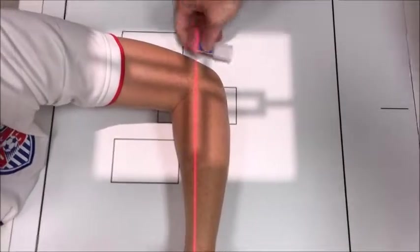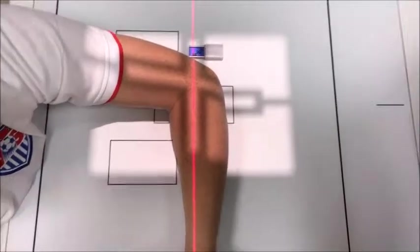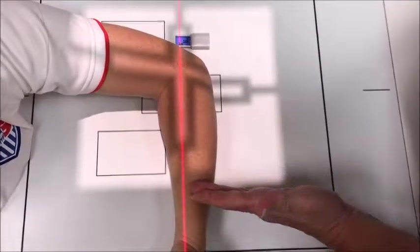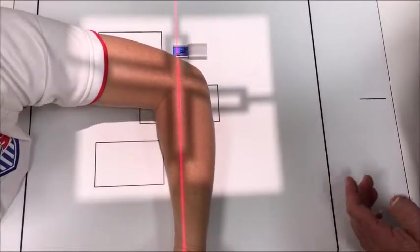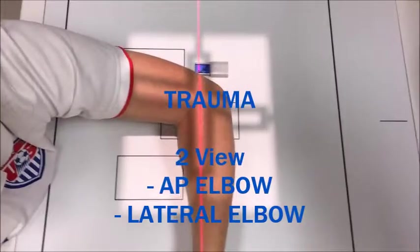Mark on the lateral side, collimate mid-shaft of the forearm and mid-shaft of the humerus. That would be your two view for trauma.